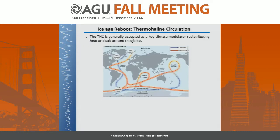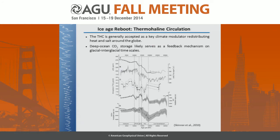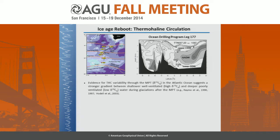But what about the ocean? What about the thermohaline circulation? We know that nowadays this mechanism is generally accepted as a key climate modulator — it basically redistributes heat and salt around the globe. Based on proxy data in the literature, there is strong evidence that the deep ocean can also be an active storage for CO2 during glacial periods. Therefore, it could be an important feedback mechanism on glacial-interglacial time scales. So, do we have evidence for changes in the thermohaline circulation during the MPT? And the answer is yes, we do.